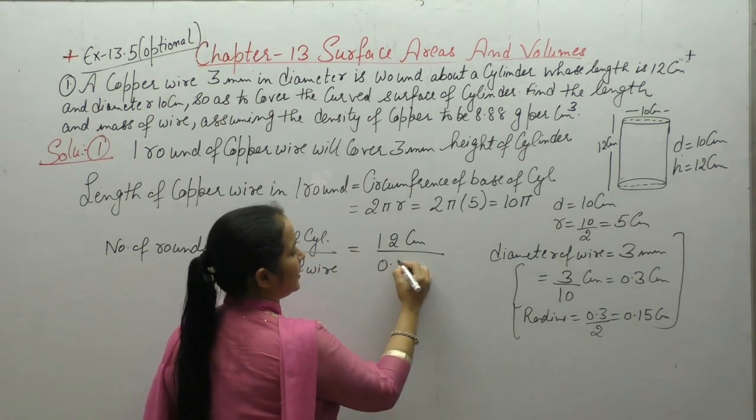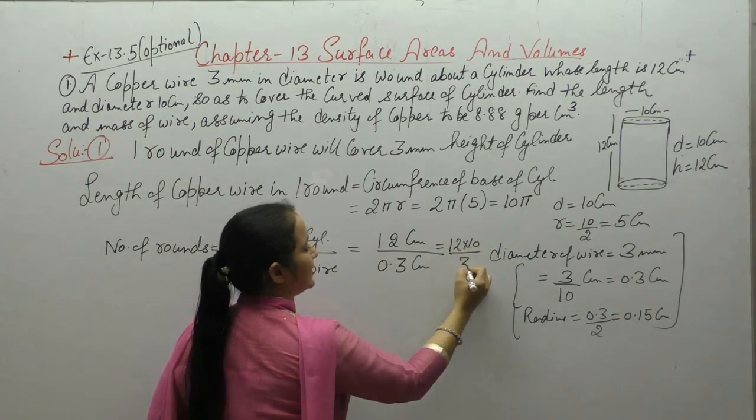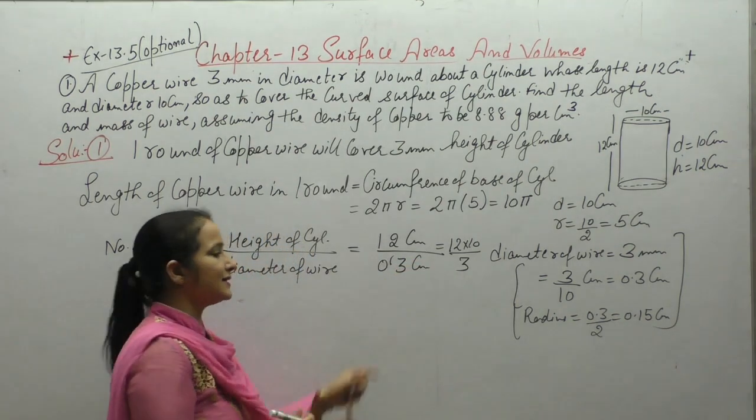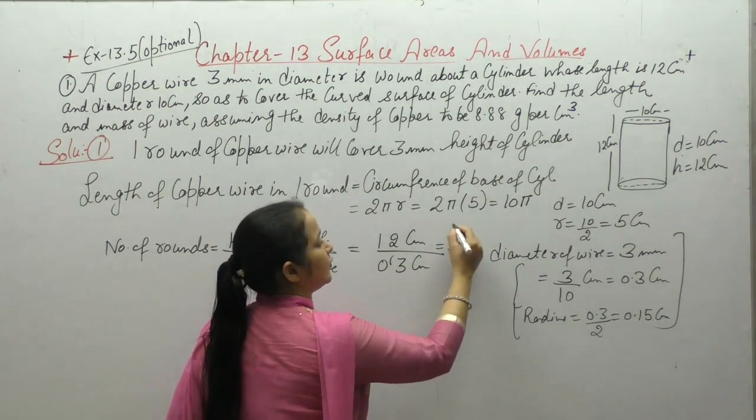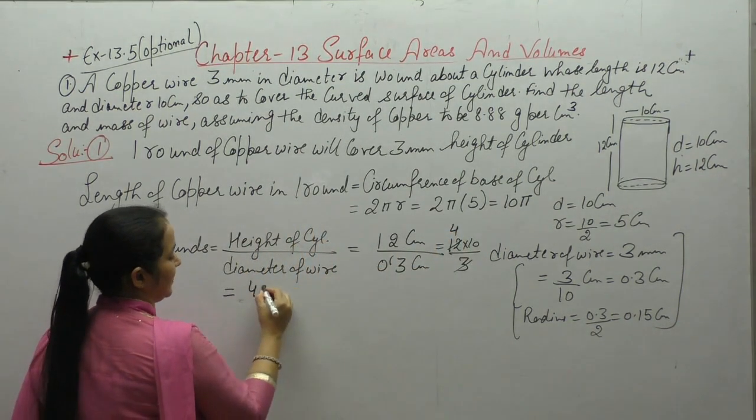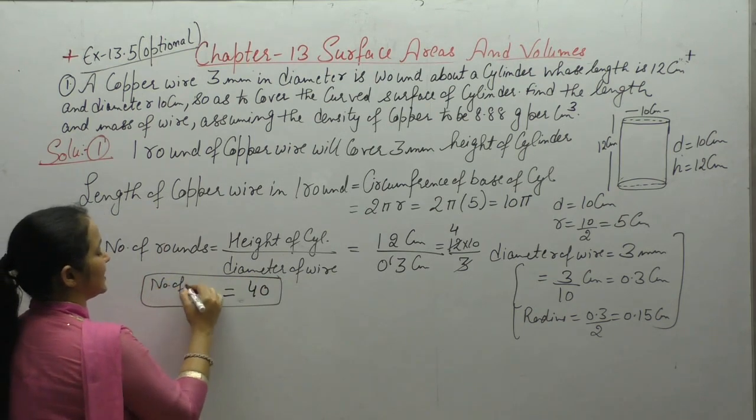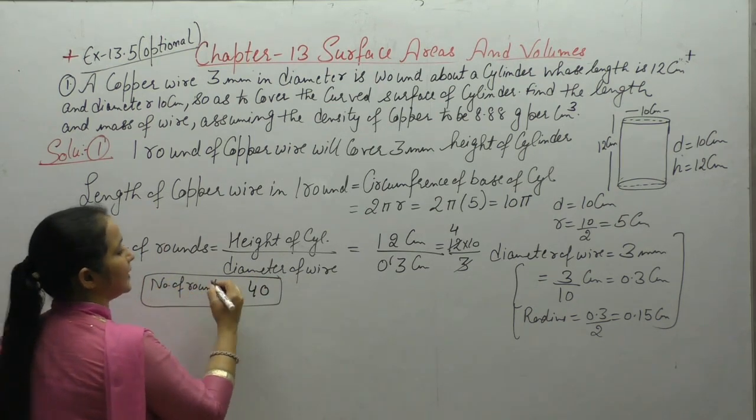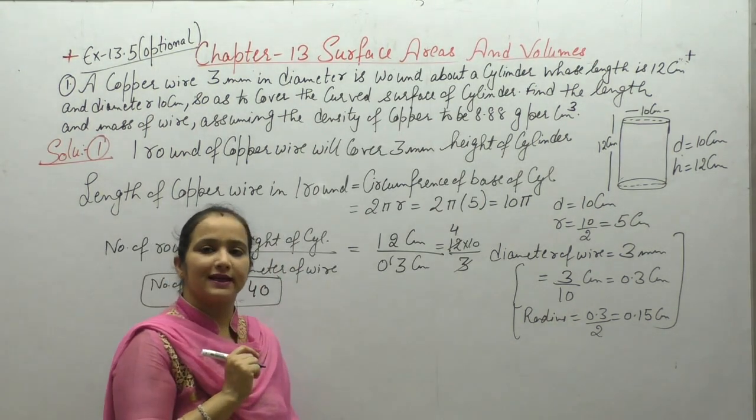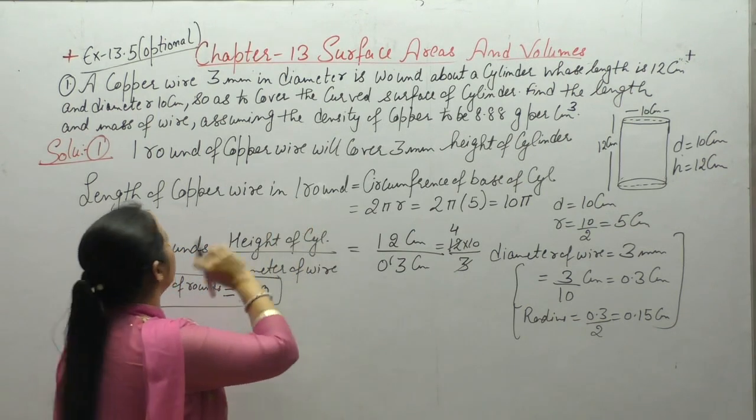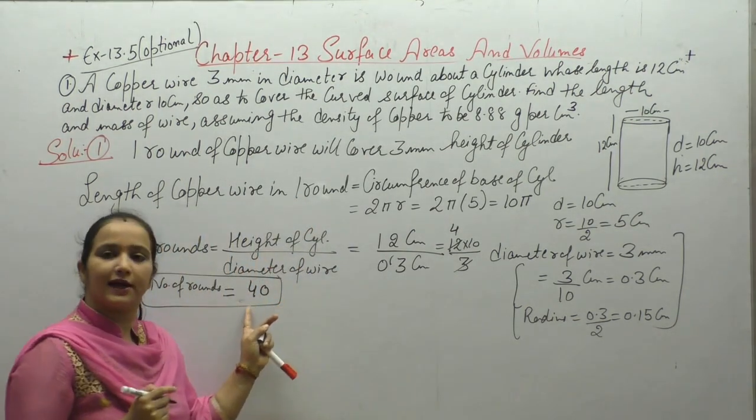So that is upon 0.3. 3 fours are 12, 12×10÷3. The decimal will be removed - one digit behind, so 10 comes on top. So 3 fours are 12. So number of rounds we have is 40. Because 40 rounds will be needed to wound this cylinder with copper wire. Now next, what do we need? We have length of copper wire in one round. Now total rounds are 40.